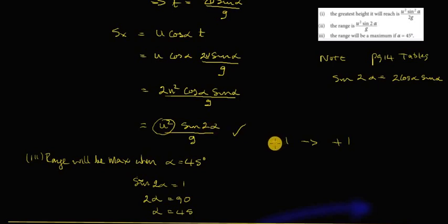Sine of any angle will range between minus 1 and plus 1. So to maximize it, we want this to be plus 1. We want sine 2 alpha to be equal to 1. So therefore, 2 alphas has to be with 90 degrees, because sine of 90 is equal to 1. So alpha is equal to 45 degrees, which is what they asked you to do.